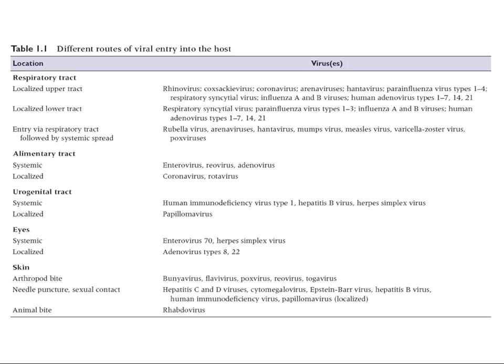Those are the main routes of entry into the host — respiratory, alimentary, urogenital, eyes, and skin. Some viruses can get into many different parts of the respiratory tract. The alimentary tract infections are caused in general by different viruses, except adenoviruses can do both — and these are specific serotypes that either infect the respiratory tract or the GI tract.